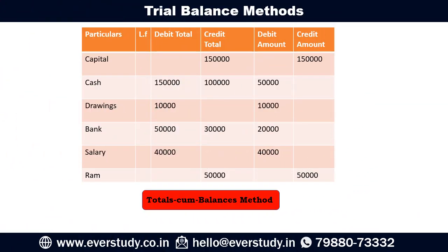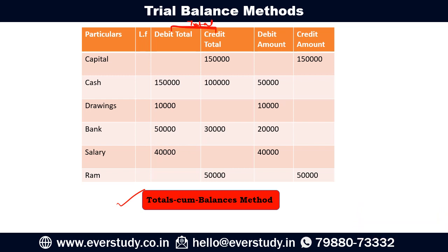With this specific example, we have now shown the total-cum-balance method. You can see that these first two columns are showing you the total method that we studied, and the last two columns are showing the balance method. In the total-cum-balance method, there are four columns — two on the basis of total and two on the basis of balance. This is a very time-consuming activity, which is why accountants generally avoid preparing it.